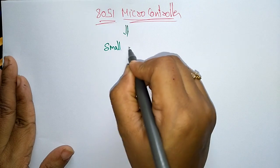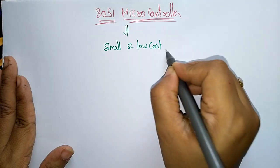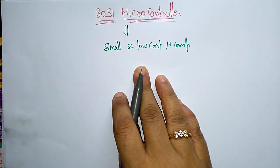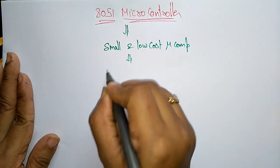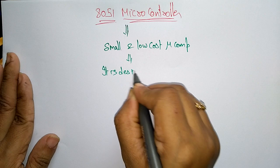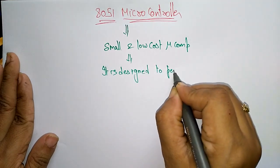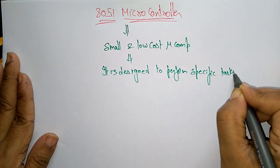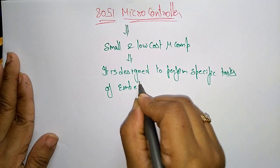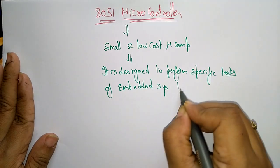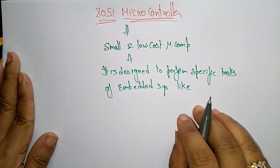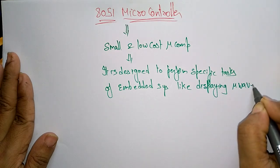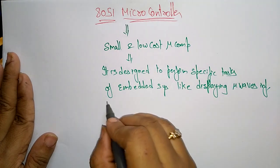Simply, a microcontroller is a small and low-cost microcomputer which is designed to perform a specific task only — it is designed to perform a specific task of embedded systems, like displaying microwave information, receiving remote signals, etc.